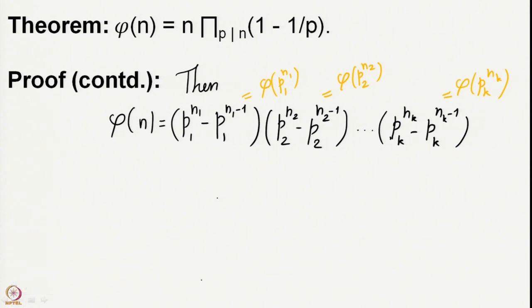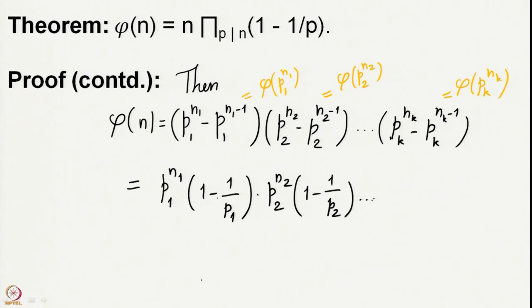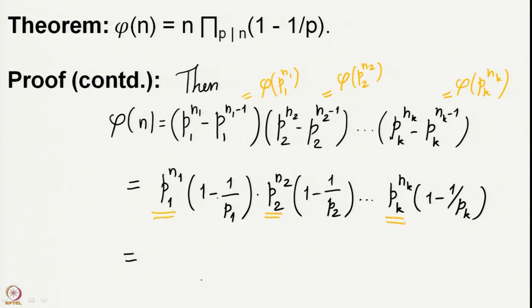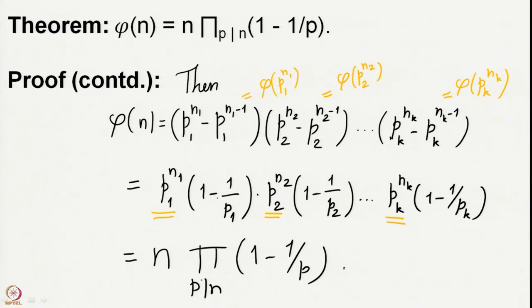It is a simple thing to factor out p1^n1 to give (1 − 1/p1), then p2^n2 gives (1 − 1/p2), and so on up to pk^nk · (1 − 1/pk). Combining all these, p1^n1 · p2^n2 · … · pk^nk equals n, and the remaining terms are simply the product of (1 − 1/p) where p divides n. It is a very simple proof but very useful for computing phi functions for any natural number n.